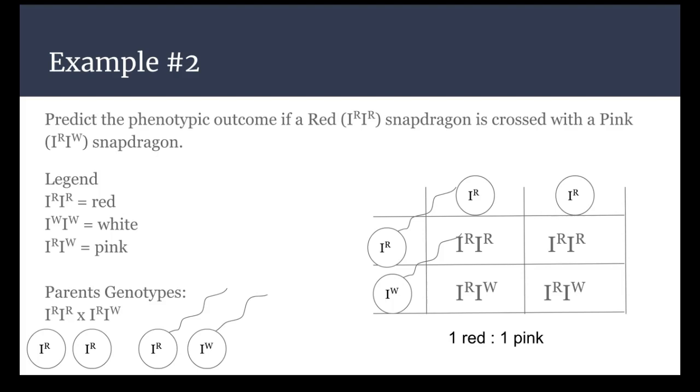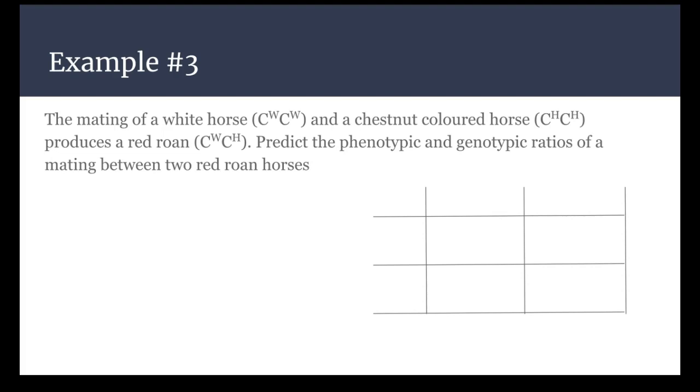And then I'm going to do one example with you guys of co-dominance. So this is when I take a white horse and this time I'm going to be using a chestnut colored horse. So this is a little bit different than the example I had when I explained what co-dominance is. So a white horse and mix it with a chestnut horse, I get a roan horse, which is a combination of the white and the chestnut color. So again I'm writing my legend: CW CW is white, CH CH is chestnut, and CW CH would be red roan.